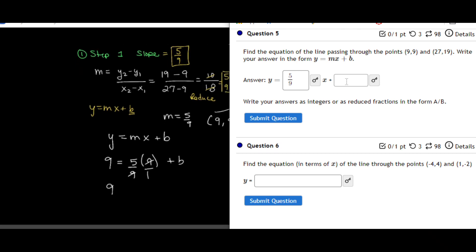The 9's reduce to equal to 1, and if I finish solving for b, I have 9 is equal to 5 plus b. So we subtract 5 from both sides, and you solve this as b is equal to 4, and then you can go ahead and plug that in.